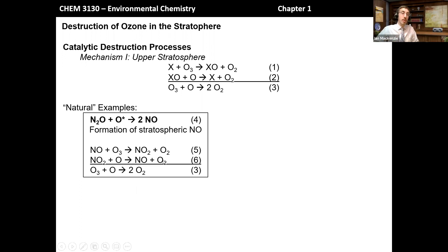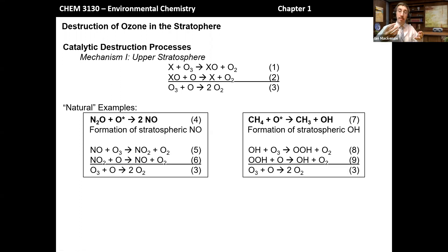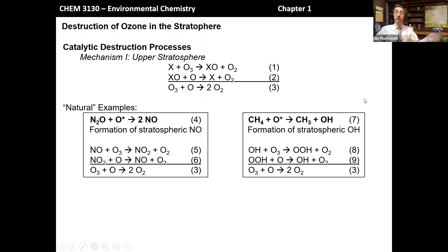That NO then acts as the X group in these reactions. NO abstracts an oxygen atom from ozone to form NO2 and O2. Then NO2 reacts with a single oxygen atom in the upper stratosphere, which abstracts an oxygen atom away to reform nitric oxide and another molecule of O2. Summing these gives the net reaction 3. Additionally, OH itself comes from a natural source — methane rises up through the troposphere into the stratosphere, and if it reacts with an excited-state oxygen atom, that abstracts a hydrogen to generate the OH radical and the methyl radical. The methyl radical rapidly reacts with oxygen and gets oxidized to CO2, but the OH radical persists as a catalytic ozone destruction agent.